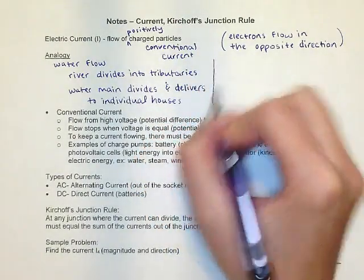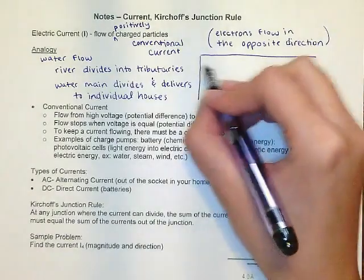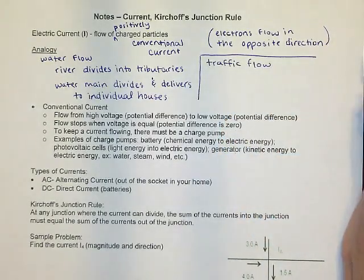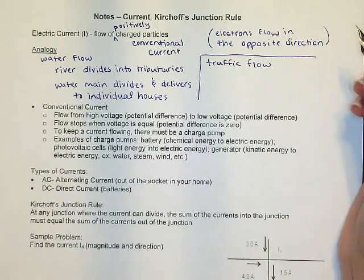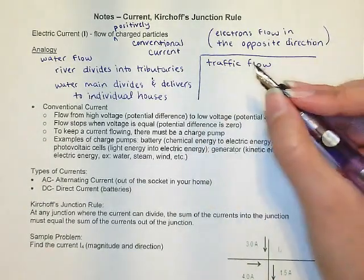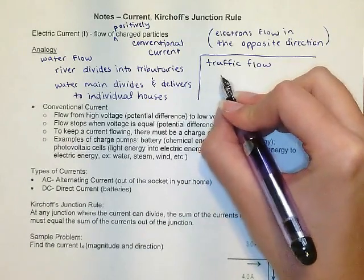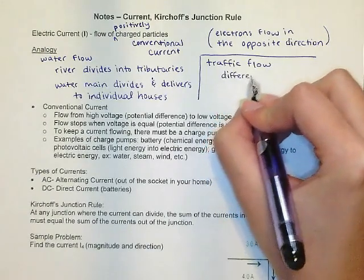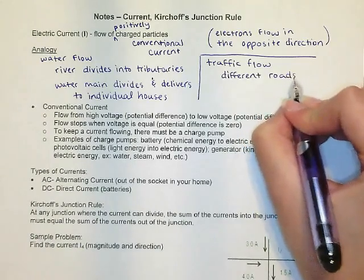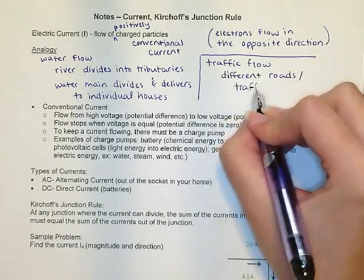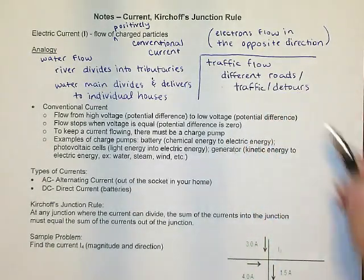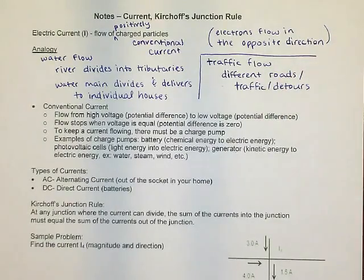One of my personal favorites moving from a small city into DFW is thinking about traffic flow. So instead of charges moving from point A to point B or water flowing from point A to point B, you can also think about cars traveling from point A to point B. They will travel down different roads. There could be roads. There could be detours.